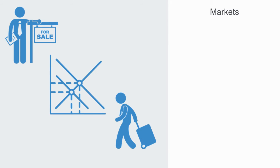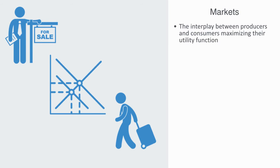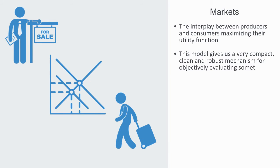Because utility is always defined through revealed preference, it always exists with respect to someone or some organization. Objective value is then defined through the interplay between people's utility functions — that is to say, the interaction between producers and consumers trying to maximize their utility creates what is called a market, and the market defines the economic value of something, what we call its price. The benefits of this model to value are many. Most importantly, it gives us a very simple way to objectively evaluate something — a very compact, clean and robust mechanism.